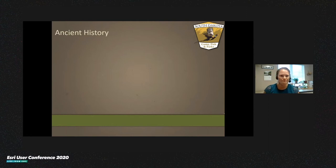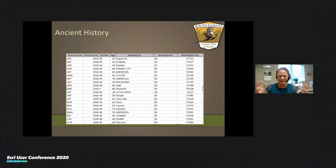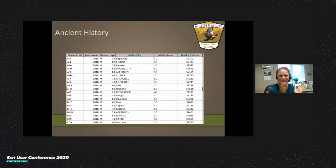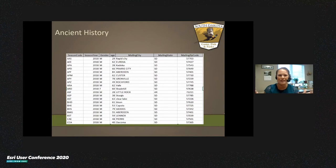We're going to talk about how we've used ESRI for planning, resource allocation, and programming outreach. This first slide shows ancient history data — the way we used to figure out where we were losing hunters and anglers. My job as R3 coordinator is to figure out how we can recruit, retain, and reactivate hunters, anglers, and shooting sports enthusiasts. The problem was: how do you identify where you're losing people by license type, gender, or ethnic breakdown from just Access tables and Excel files?